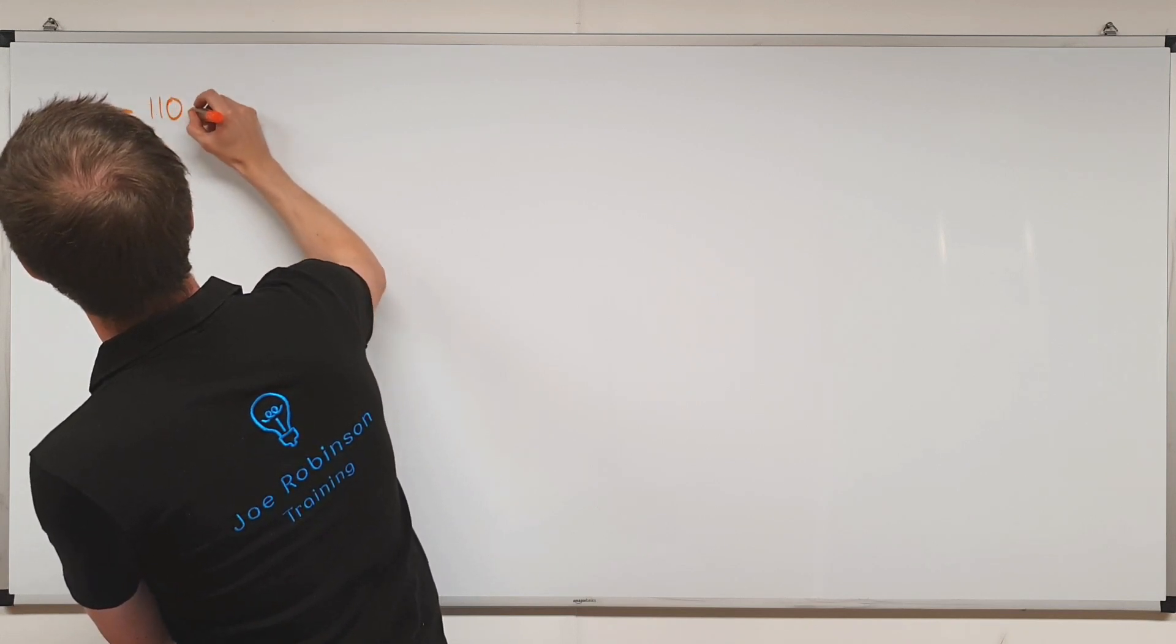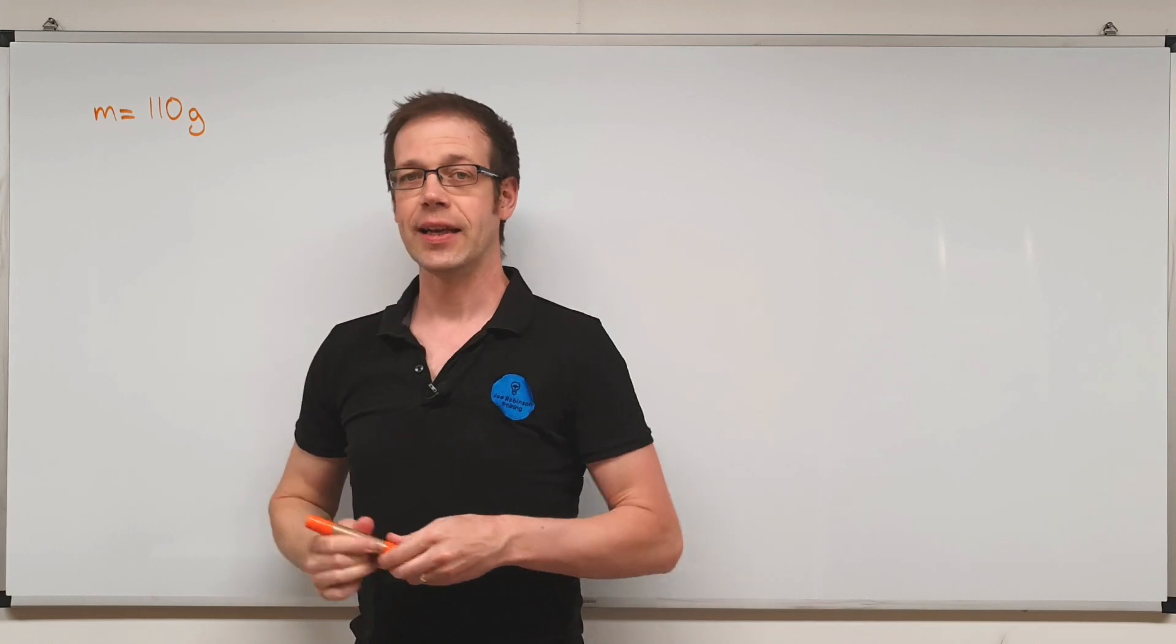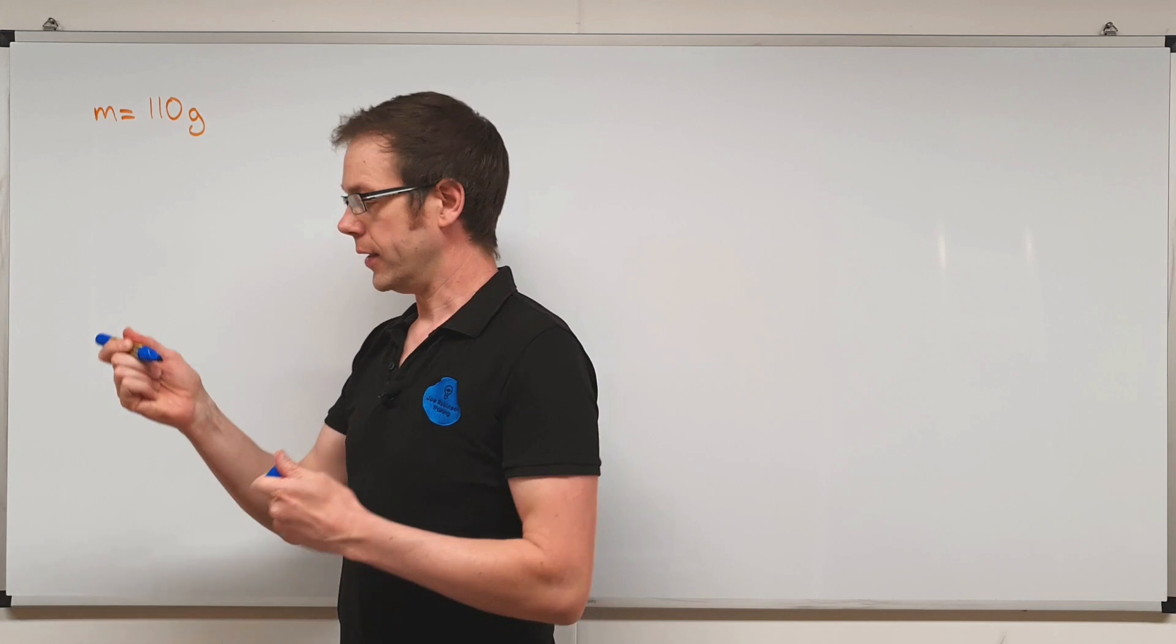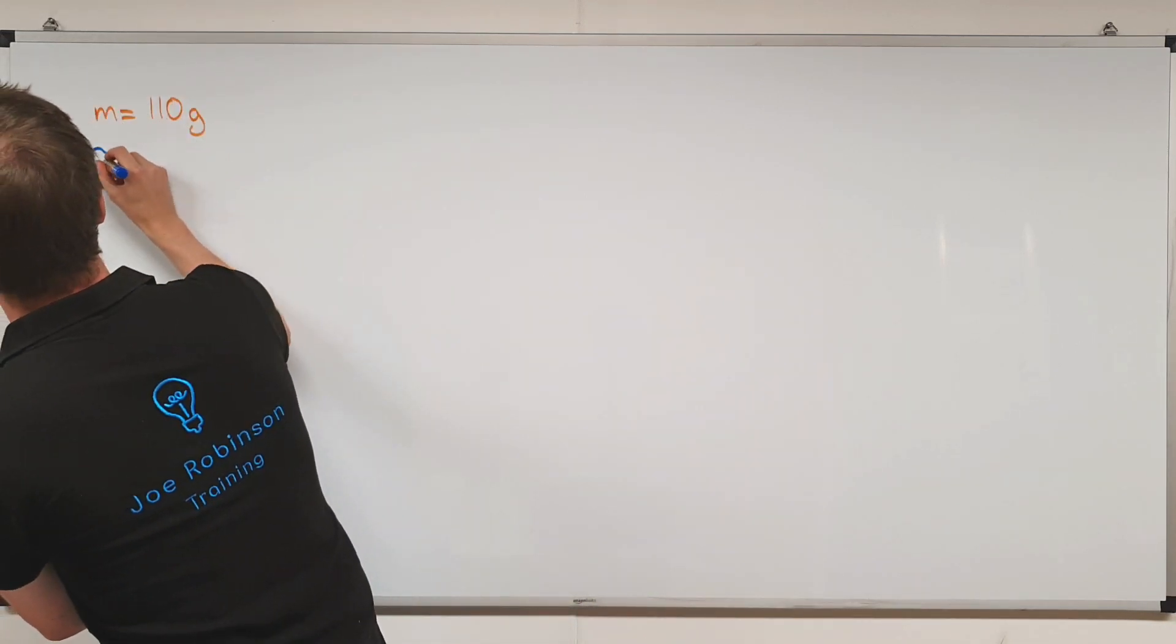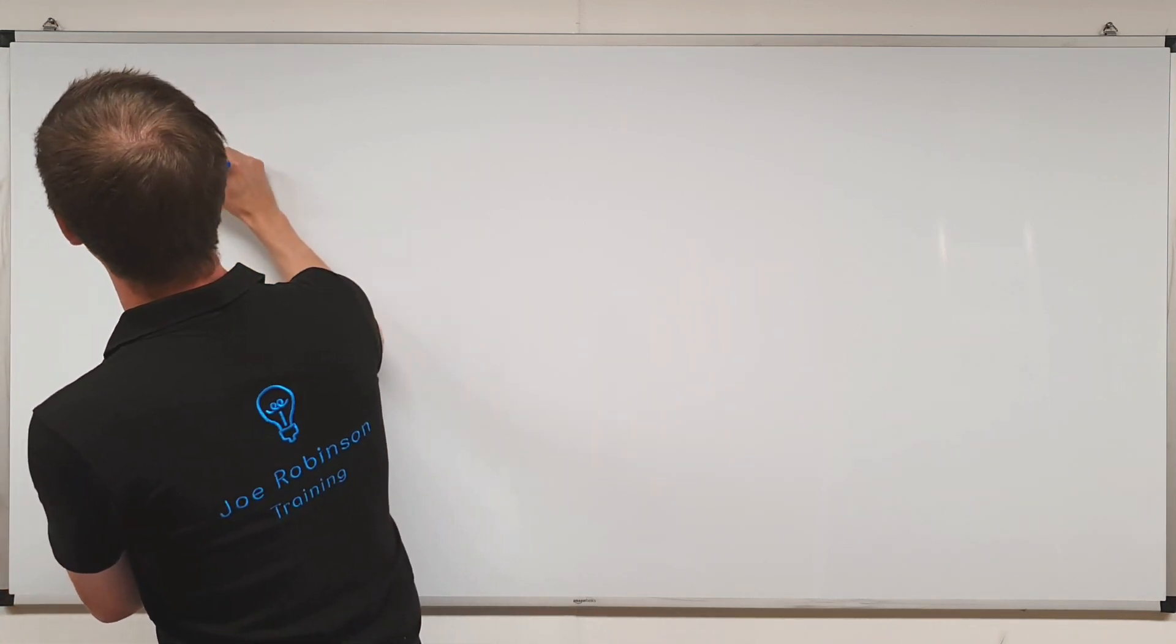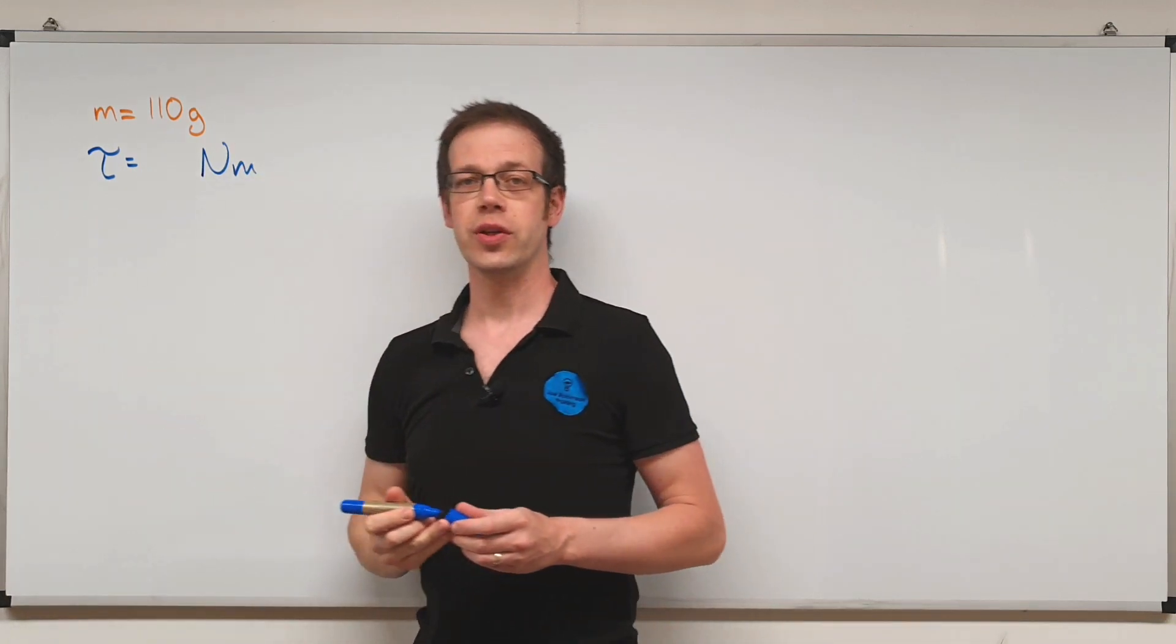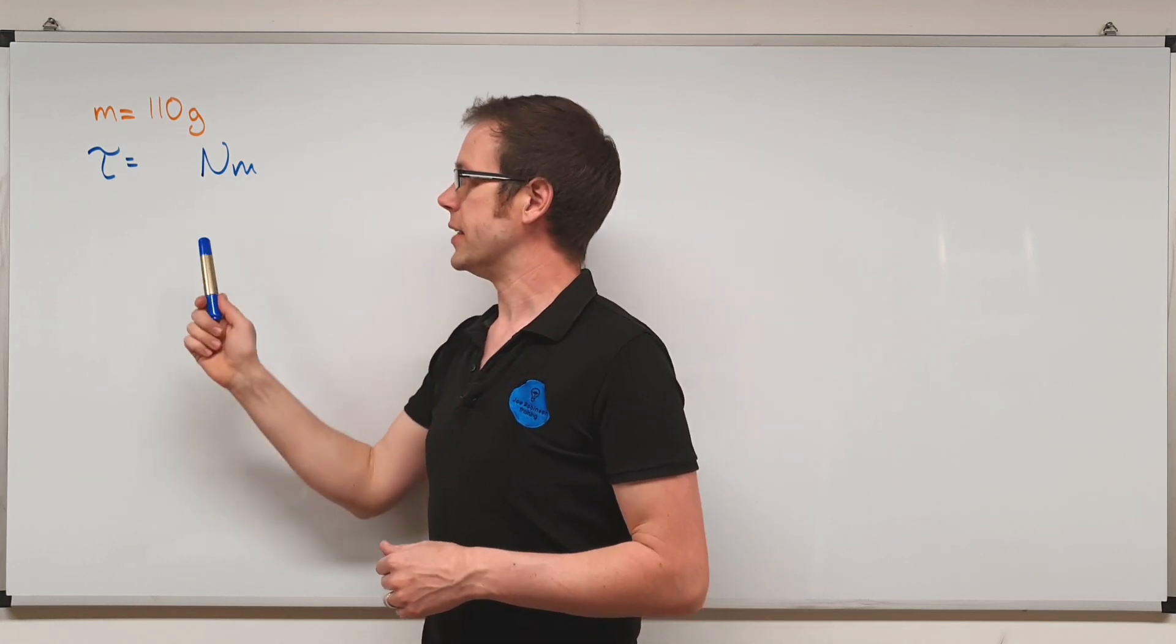So we had that value as a reading of the mass. Now in this question we're hoping to find the torque, so we're trying to find out what torque is. So there's that Greek letter tau. That's what we're trying to figure out what the value is going to be, and if you remember, that is measured in newton metres. So we're trying to figure out what the torque of the motor was in newton metres.